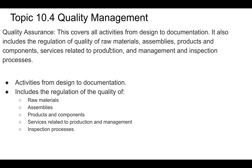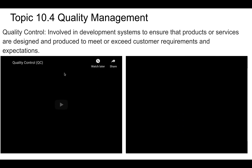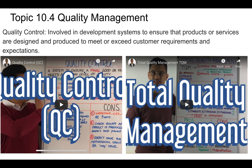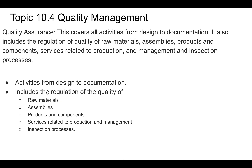Quality assurance connects tightly with total quality management and quality control. We're talking about all activities from design to documentation — it includes the regulation of raw materials, assemblies, products, components, services related to the product, and management inspection processes. Essentially what you're trying to do is develop systems with documentation that check the quality of the process along the way. Quality assurance is more process-oriented, whereas quality control is more product-oriented.